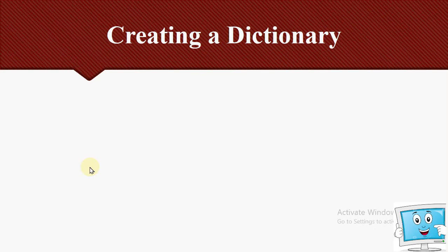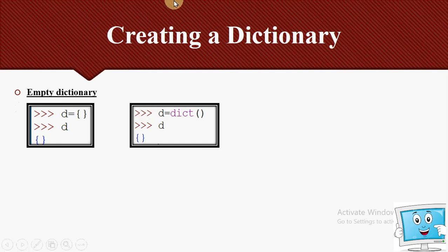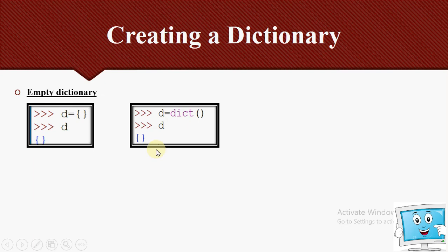Now we are creating a dictionary with different methods. The first method is creating an empty dictionary — a dictionary with no key-value pairs. We can write D = {} (empty curly braces), or we can use the dict function: D = dict(). Both represent an empty dictionary and produce the same output.